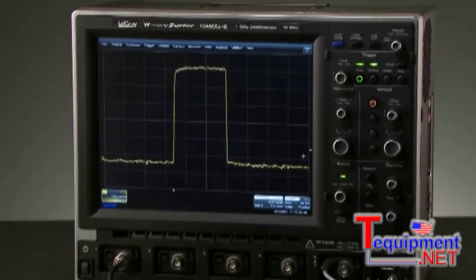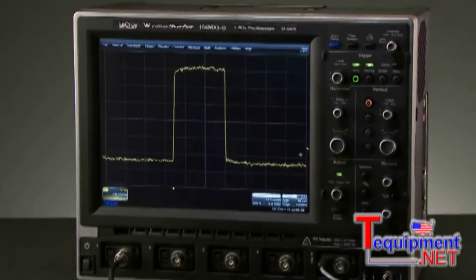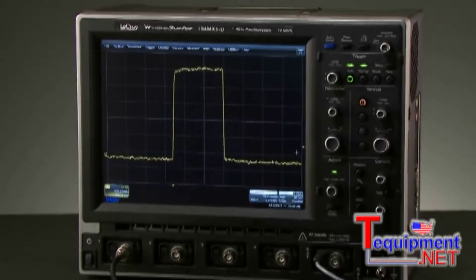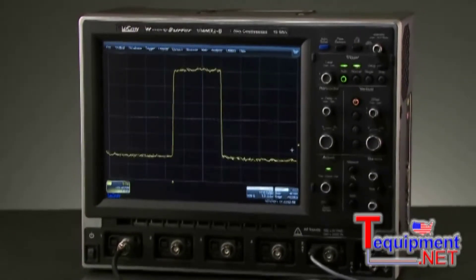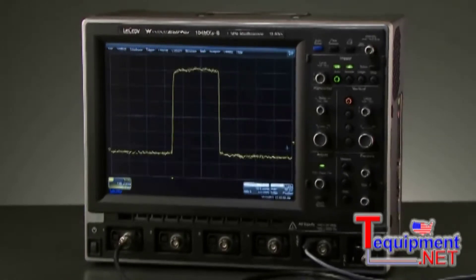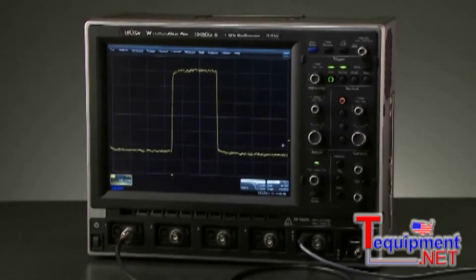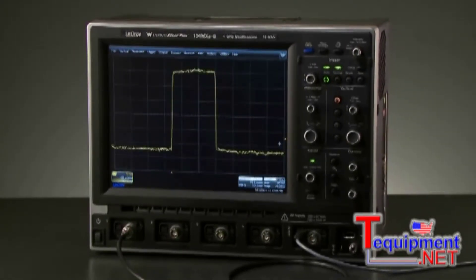Modern oscilloscopes offer a variety of ways to find elusive problems, like runts or glitches. WaveStream Fast Viewing Mode enables update rates of 22,000 waveforms per second to display hard-to-capture waveforms.